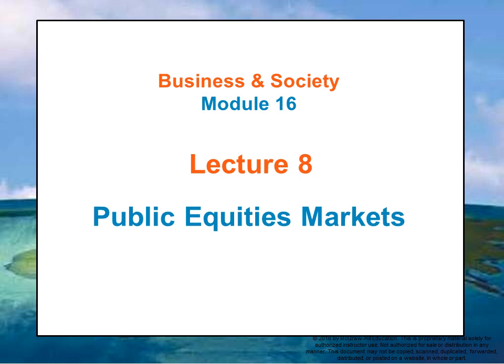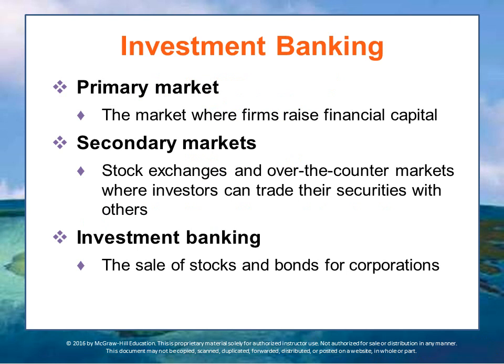Let's talk about public equities markets, some of the various markets and their activities. New issues of stocks and bonds are sold directly to the public and to institutions in what is known as the primary market. This is the market where firms raise their financial capital — they sell their stock and bonds to the public. The primary market differs from secondary markets, which are stock exchanges and over-the-counter markets where investors can trade securities with one another. Primary market transactions usually raise cash for the issuing corporations, while secondary market transactions do not.